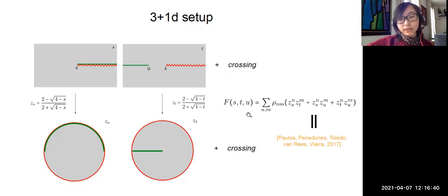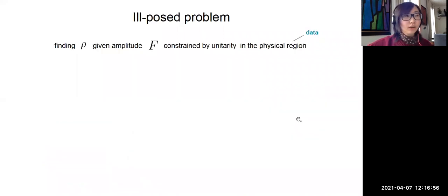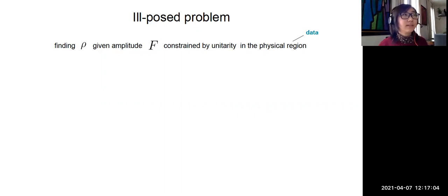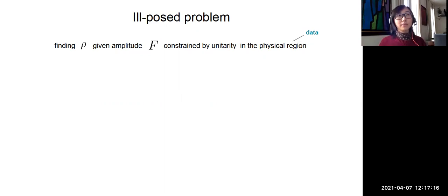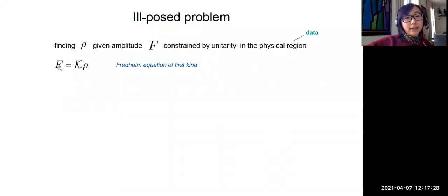The amplitude is written as a series expansion in double disk variables, equivalent to the triple disk variables considered in a previous paper using the constraint s + t + u = 4. The problem we try to solve is essentially a maximization problem: find the double spectral density ρ given that our amplitude is constrained by unitarity in the physical region — which I'll call the data, since this is where the partial waves can be measured experimentally. The relation between ρ and the amplitude is through an integral equation given by the Mandelstam representation.